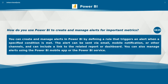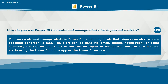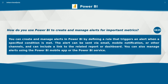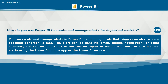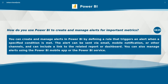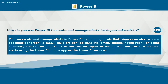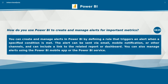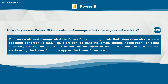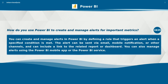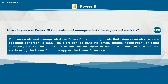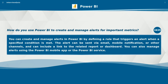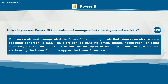How do you use Power BI to create and manage alerts for important metrics? You can create and manage alerts in Power BI by defining a rule that triggers an alert when a specified condition is met. The alert can be sent via email, mobile notification, or other channels and can include a link to the related report or dashboard. You can also manage alerts using the Power BI mobile app or the Power BI service.